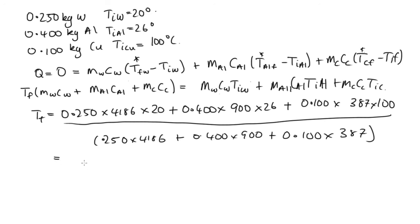Solving this on the calculator, we get 23.6 degrees. We'd expect the final temperature to be somewhere between 20 degrees and 100 degrees C, which it is. It's very close to the initial temperature of water because the heat capacity of water is so much higher than the heat capacity of the other materials.